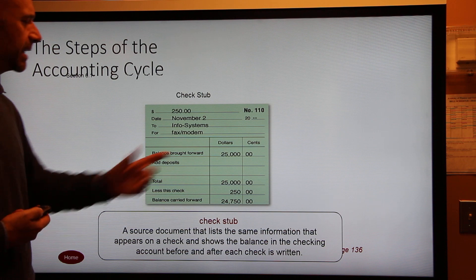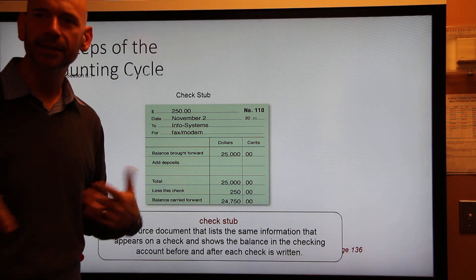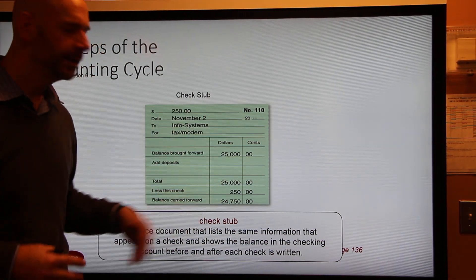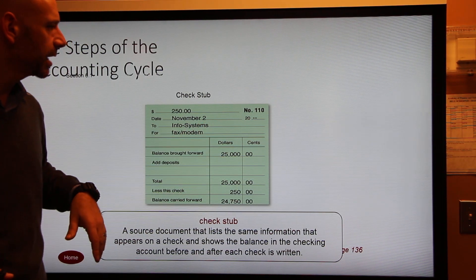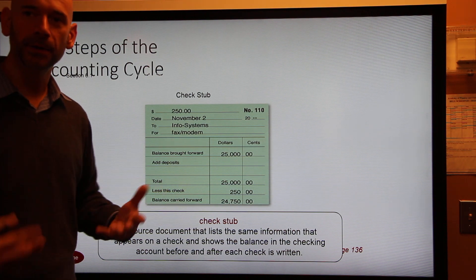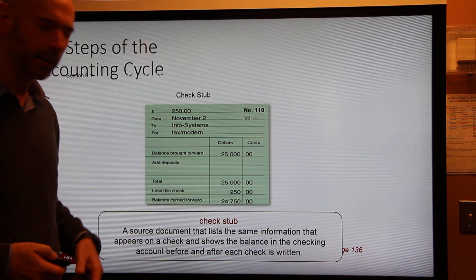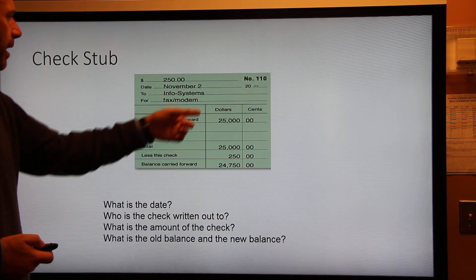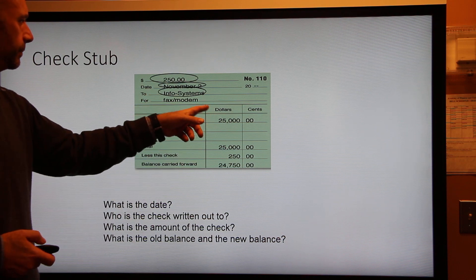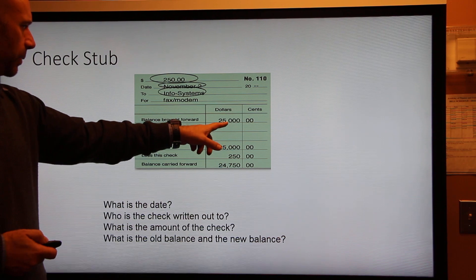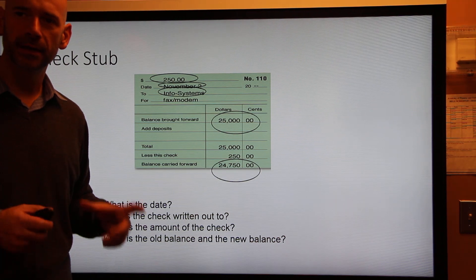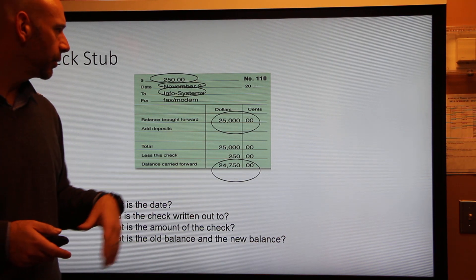The last source document is a check stub. When you write a check, that's an order to the bank to give somebody your money. You give them the check, but the stub stays inside your checkbook. That stub is a source document recording who you wrote the check to, how much it was, and what the previous balance was. Things you'll find on a check stub include the date, who it was written out to, the amount of the check, the old balance, minus that amount, giving you the new balance.